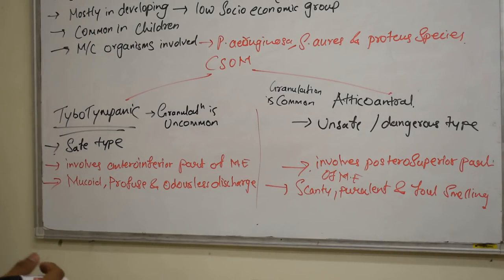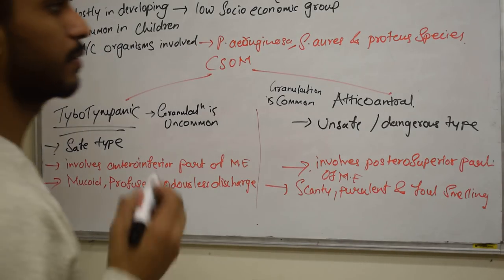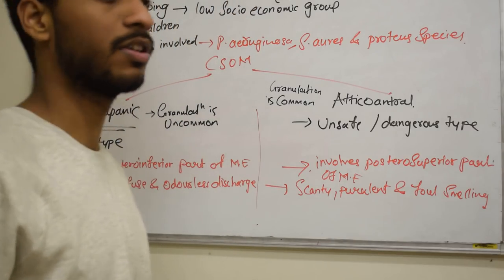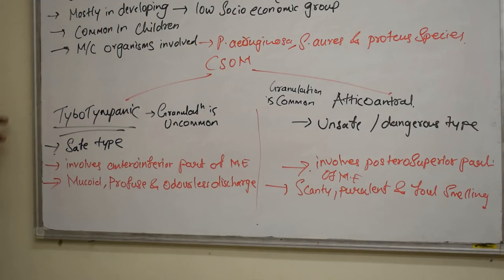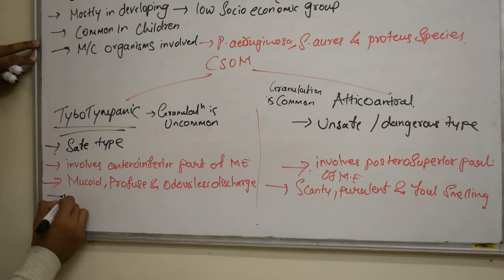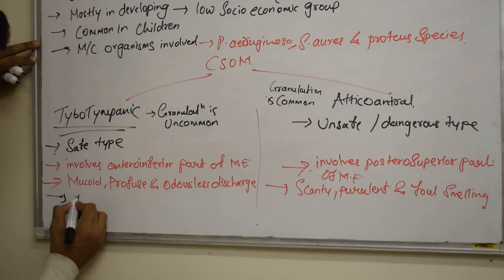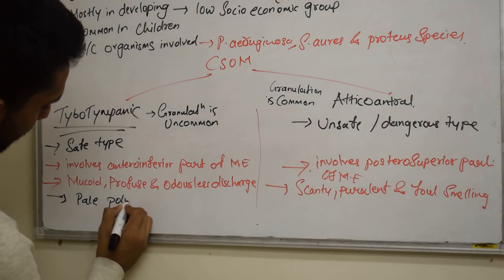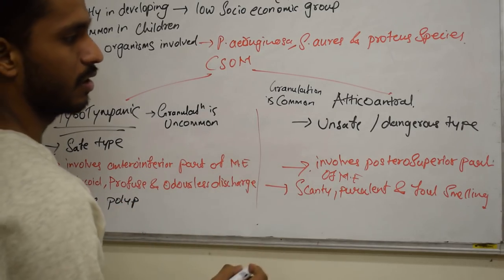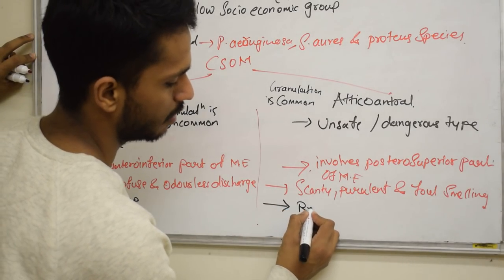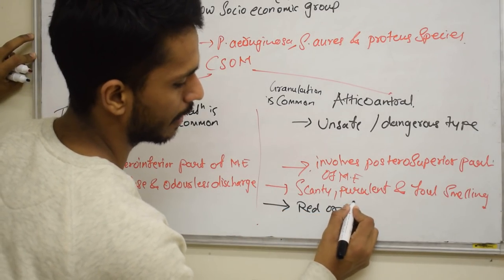One more thing seen is called a polyp, which we will discuss further when we talk about pathological changes. In tubotympanic type, the polyp is pale in color, whereas in atticoantral type, the polyp is red or fleshy.